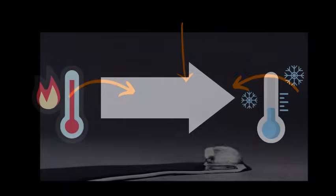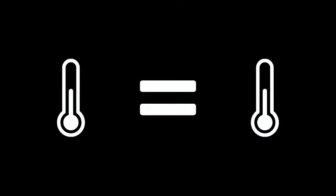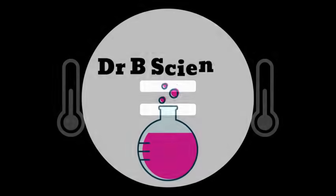In summary, these examples illustrate that thermal energy naturally moves from hotter objects to cooler objects. The energy will continue to transfer from one object to another until thermal equilibrium is reached.